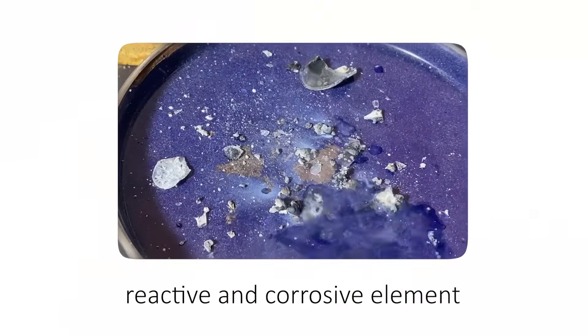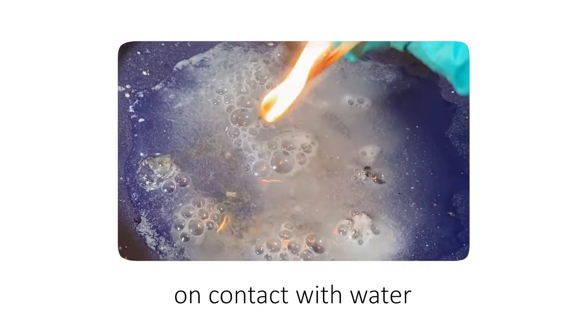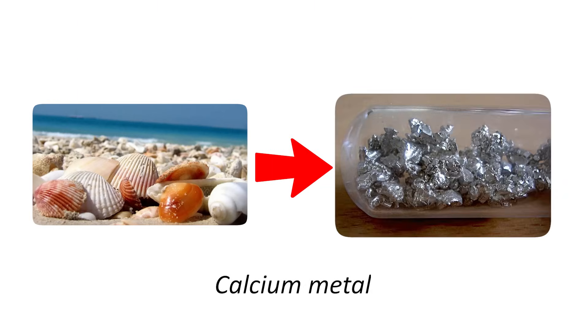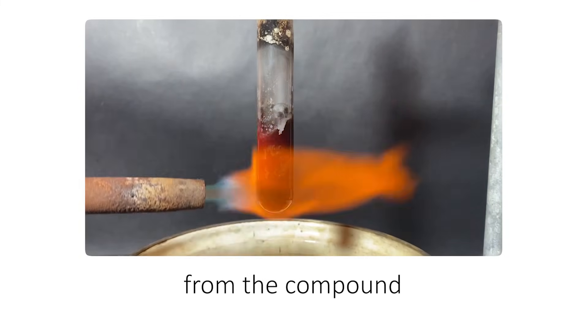Calcium metal is an extremely dangerous, reactive, and corrosive element with an ability to create explosive hydrogen gas on contact with water. Seashells are mainly composed of calcium carbonate, and to go from seashells to calcium metal, all I have to do is process it into a viable form and then somehow pull the calcium out from the compound.